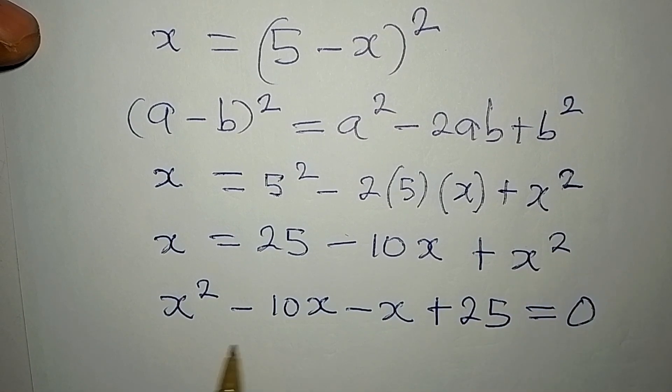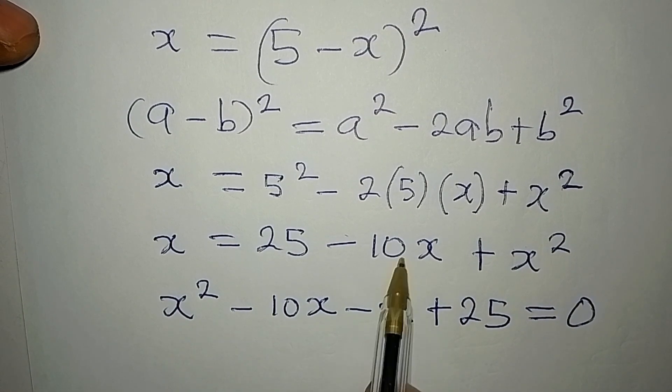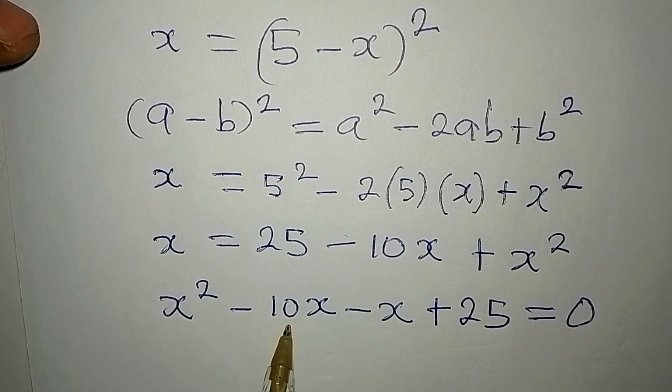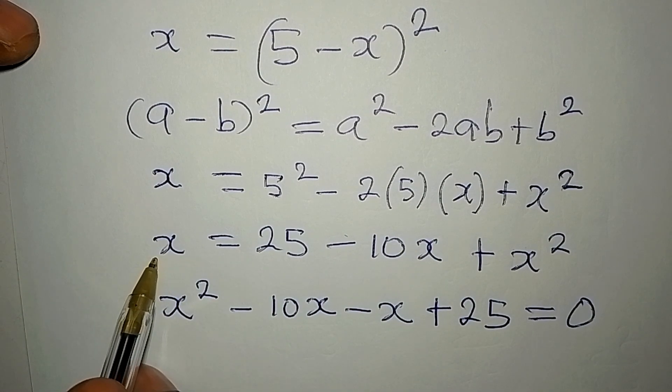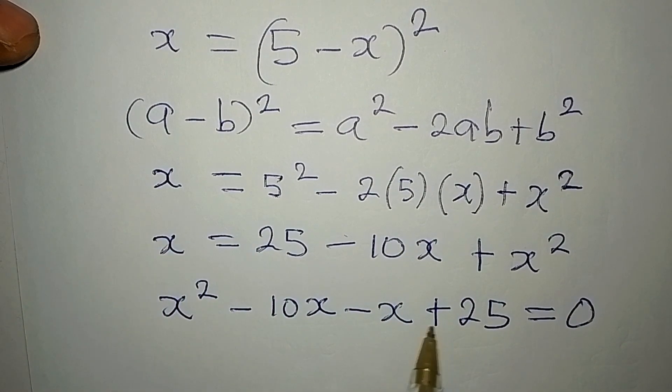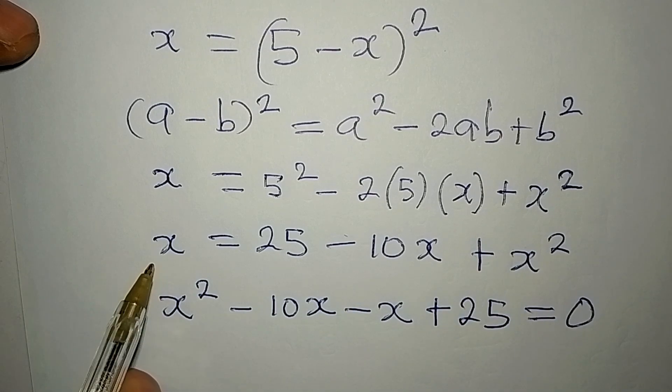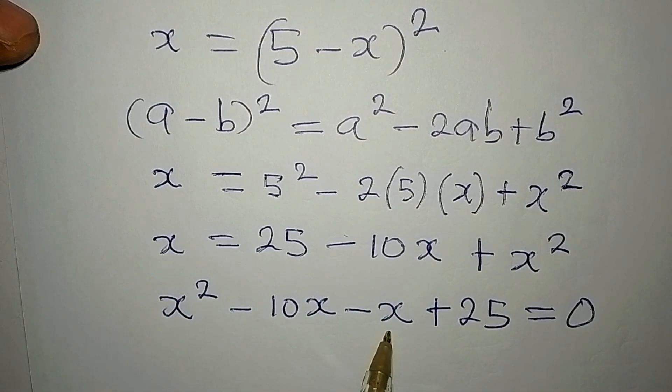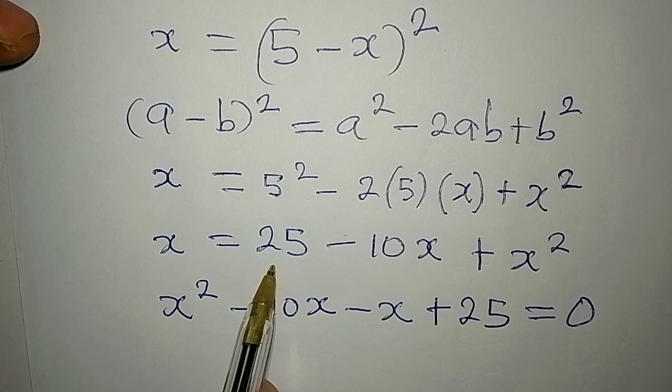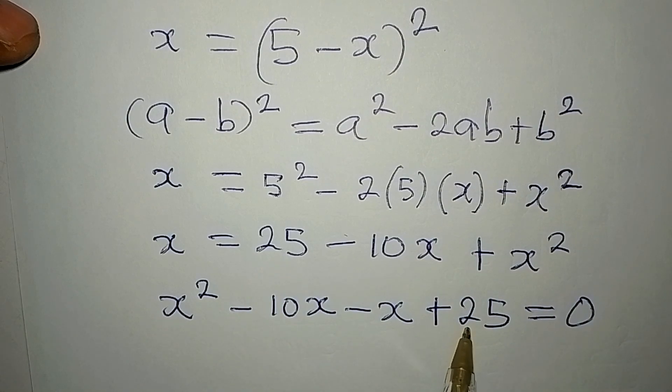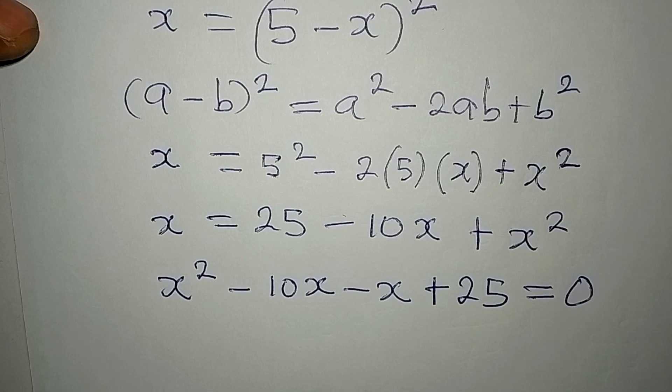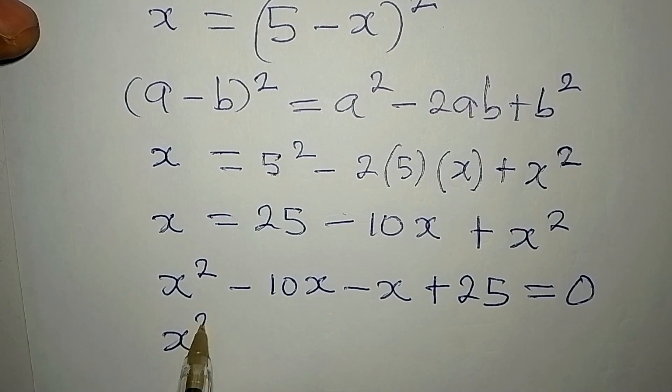I want to believe that you understand how I rearranged this. I'll go over that again. x squared will come first, now this is appearing, then this is on another side, so if it crosses to where these are it will turn to negative x. That's how I got the negative x, and 25 already belongs to the side so it is still plus 25.